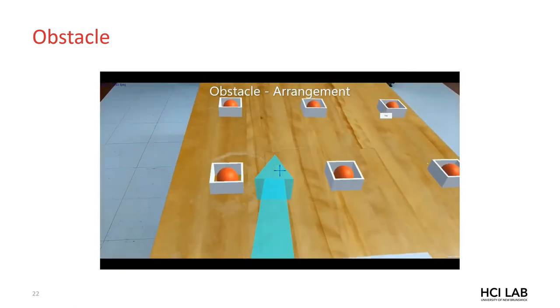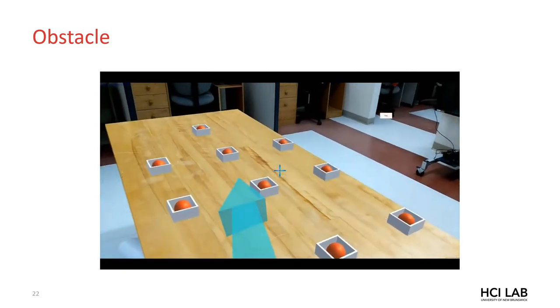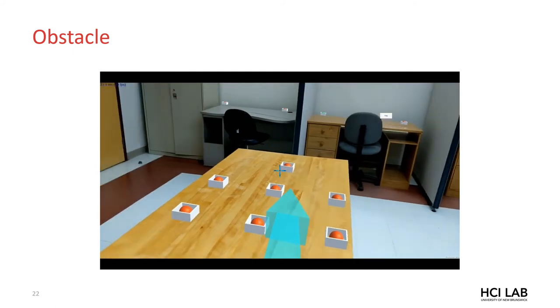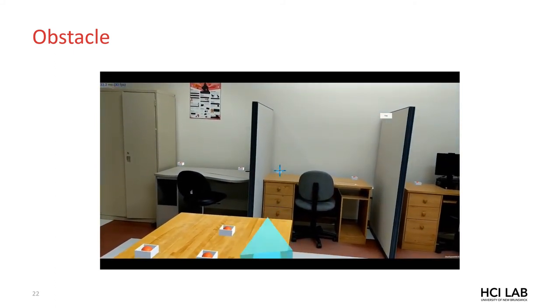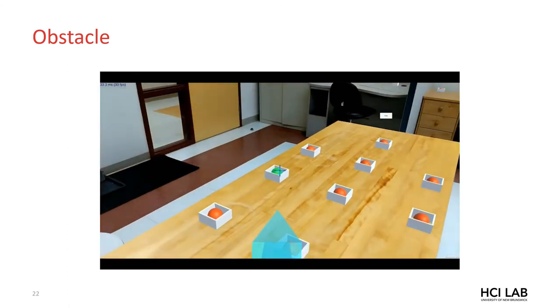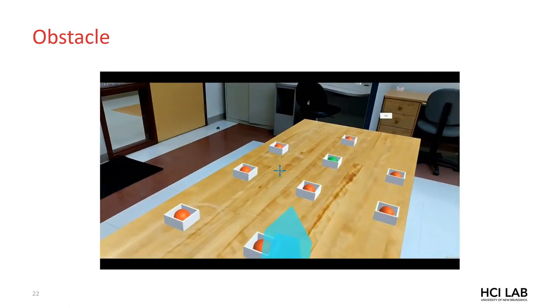In obstacle, targets are partially occluded from the user by an obstacle. To target these, the user often needs to shift their viewpoint by moving to the side or up and down so that they can accurately acquire the target. It's also important to note here that we did tell participants in our study that they were allowed to move, which they most often did in this obstacle condition. Participants were asked to return to the starting position between trial blocks.